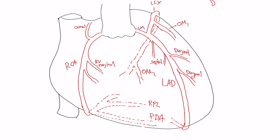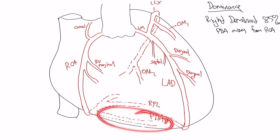Quickly about dominance. What is dominance? We talk about right dominant. This is in 85% of patients. This is when the PDA arises from the RCA. Pretty simple. This is like exactly what we see here. The PDA is coming off the RCA.